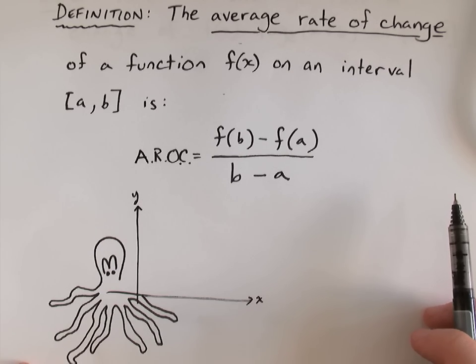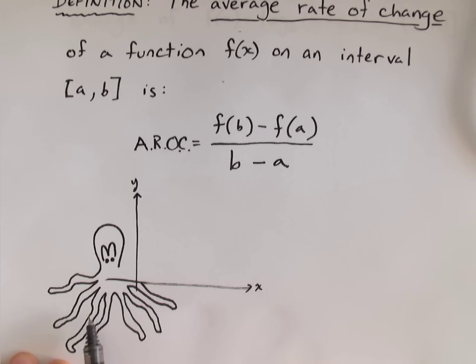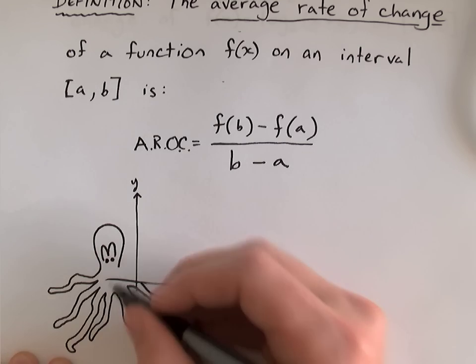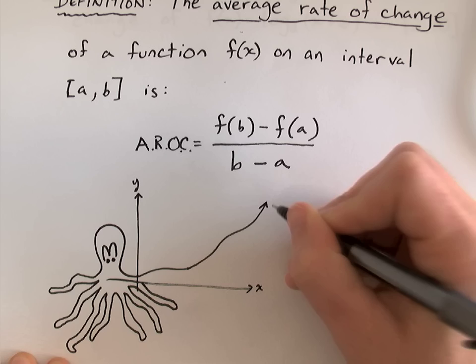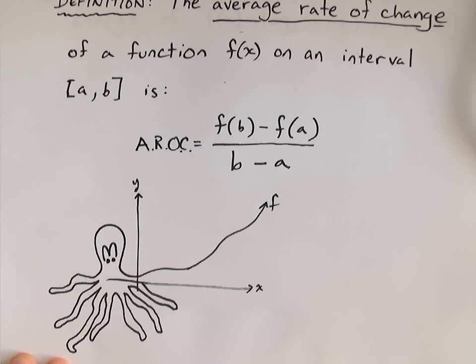So here we have a little octopus, but oh wait, it's not an octopus because it only has one, two, three, four, five, six, seven legs. So if we draw another leg here, and we'll let that other leg represent our function f, which is a nonlinear function.